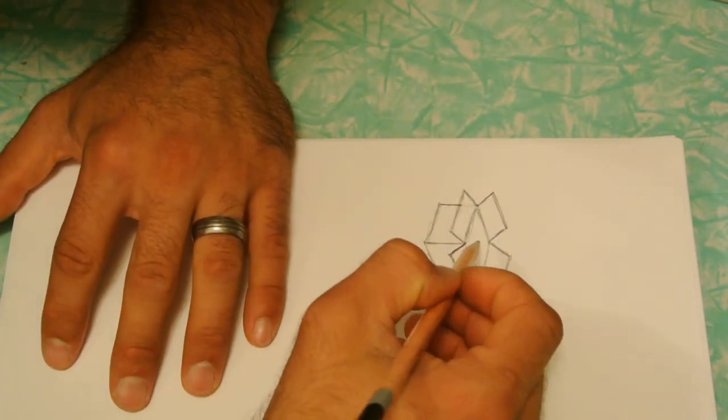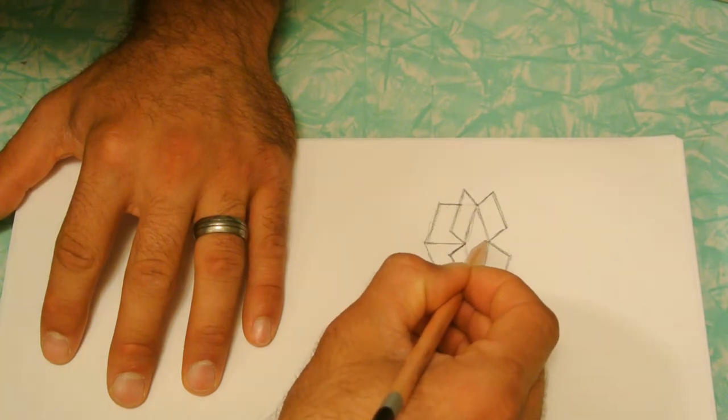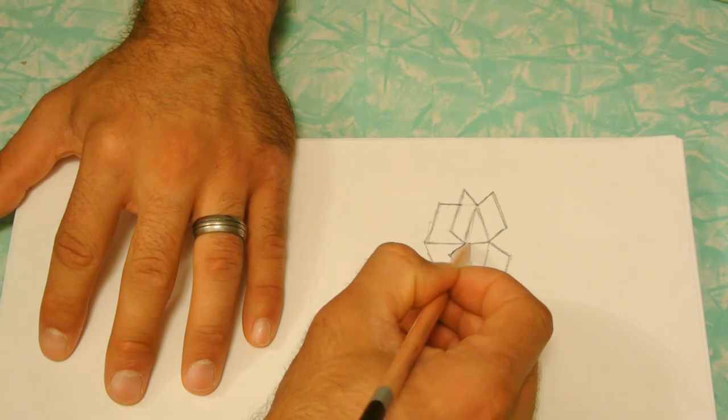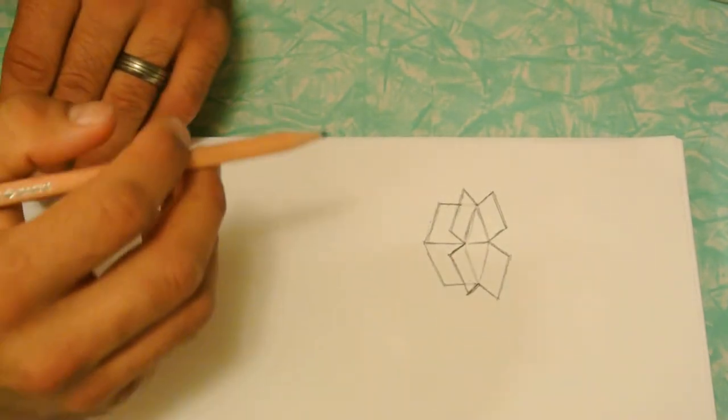Now you're going to draw a line on the inside corner of the box. It really makes it 3D right there.